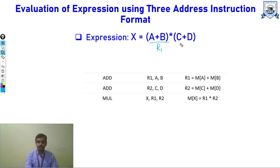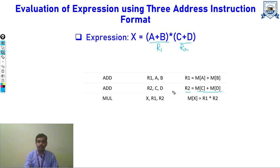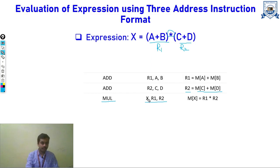Now we have C plus D. We do the same as before — we add them and store the result at register R2, because we need to use 3 addresses. At last we have a multiplication: we use the multiply opcode and store all 3 addresses — the destination and R1 and R2. So X will store R1 multiplied by R2. In this way we evaluate an expression using the 3-address instruction format.